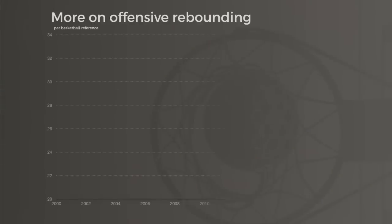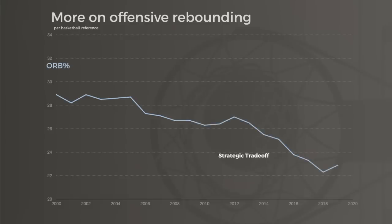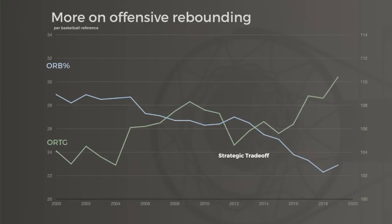We can see the same issue with offensive rebounding. League offensive rebounding rates have plummeted in the last decade due to deliberate offensive strategies. Yet foregoing offensive rebounding has helped teams become more efficient — not because offensive rebounding isn't helpful, but because the strategic trade-offs are even more helpful. Teams not only get back to avoid transition, but they shoot way more threes, which means fewer rebounders near the hoop when stretch big men are out on the perimeter.